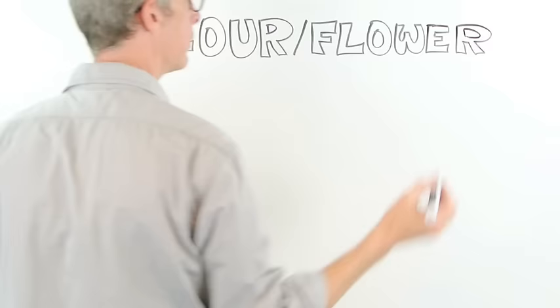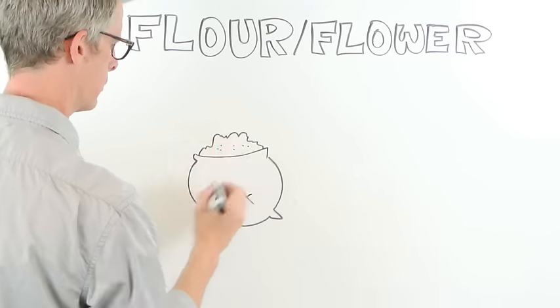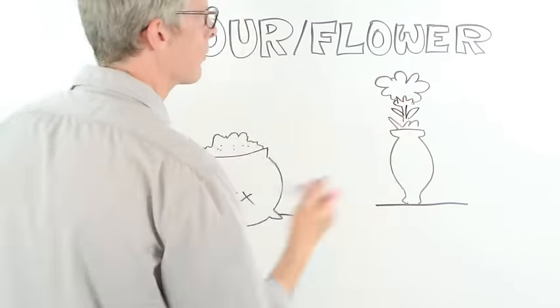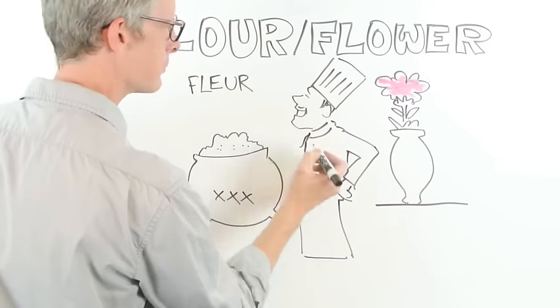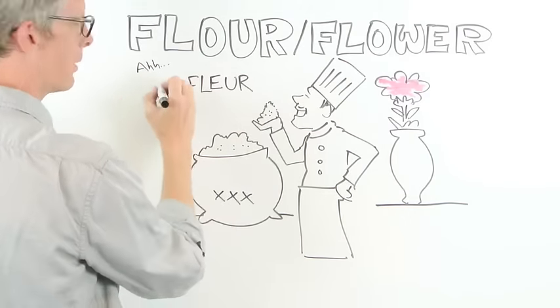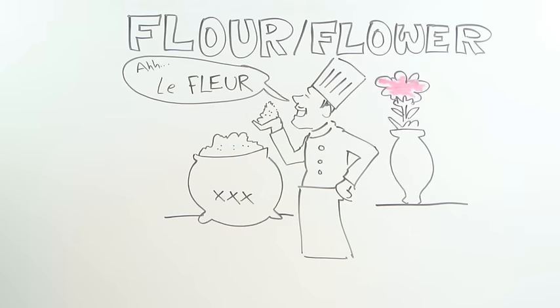Like flour and flower. They both came from French fleur. The baking ingredient was named that way because the part of the plant used to make it was considered the flower of the grain, the best part of it, taking away all the chaff and other impurities.